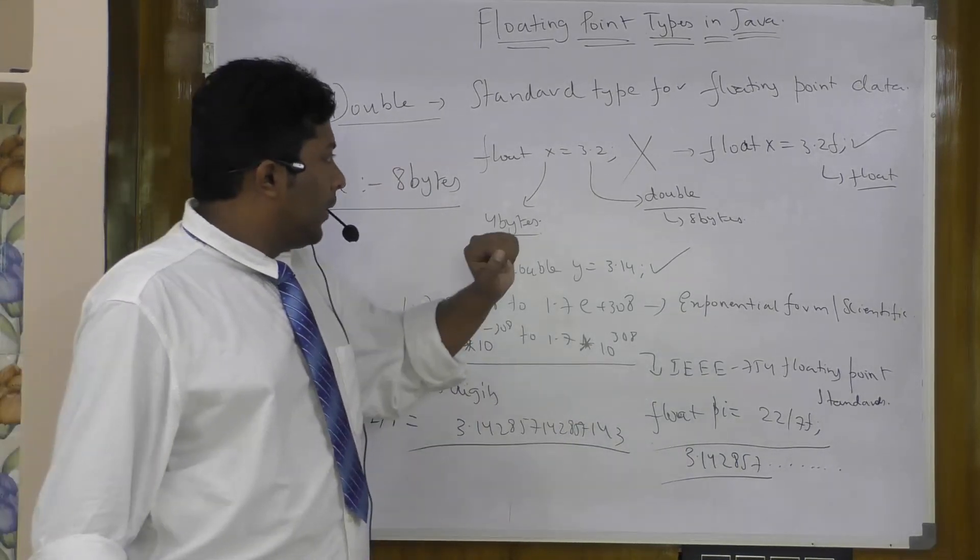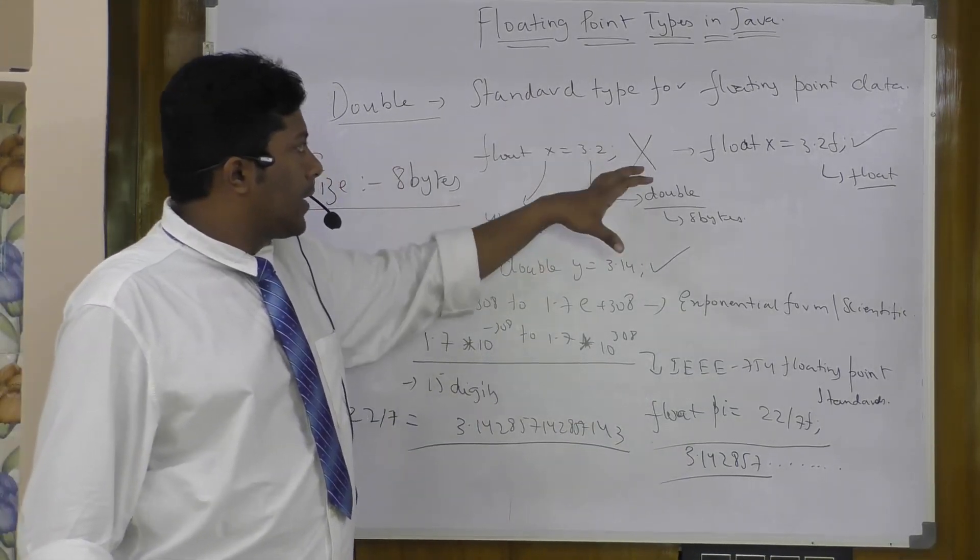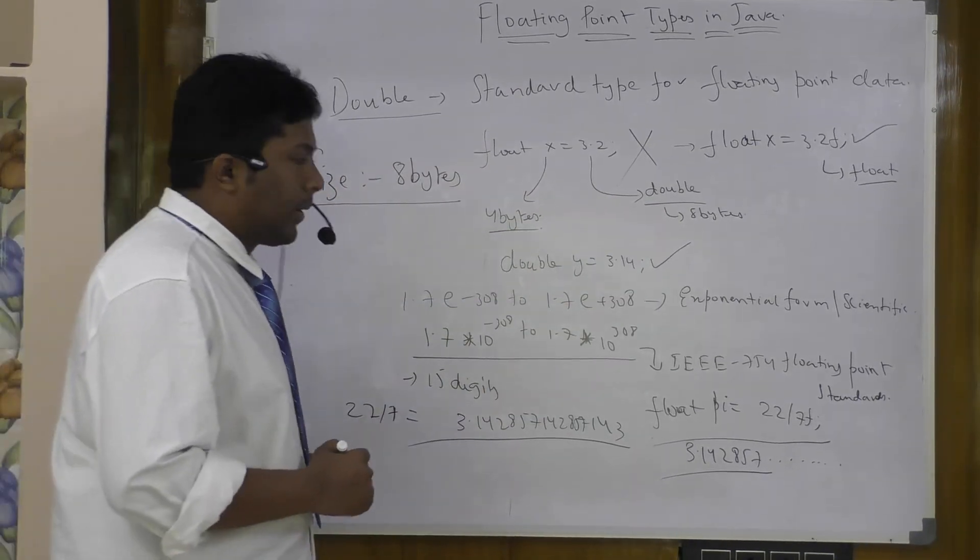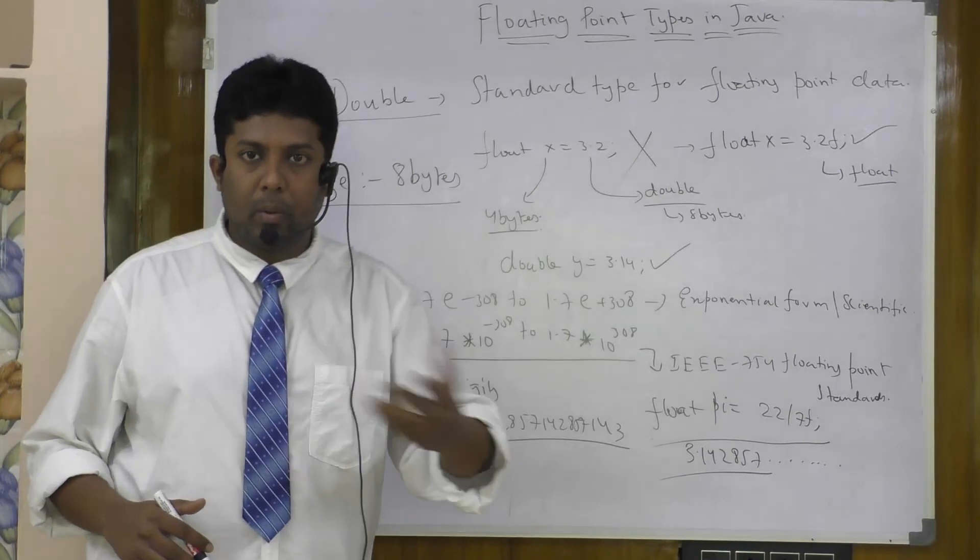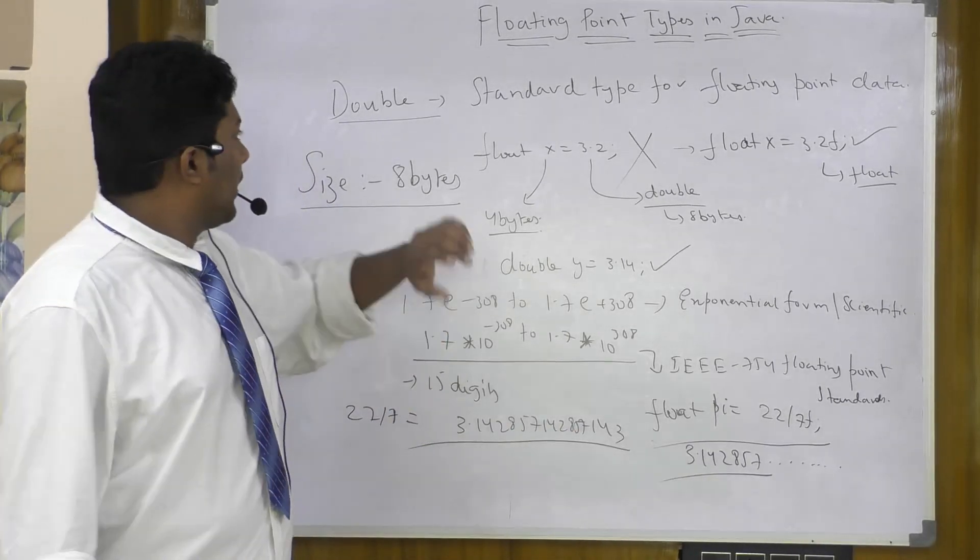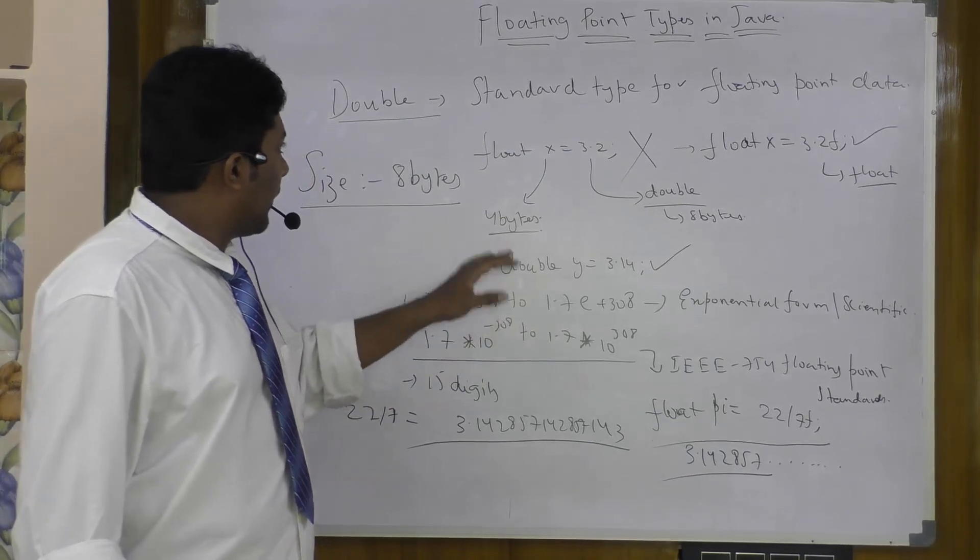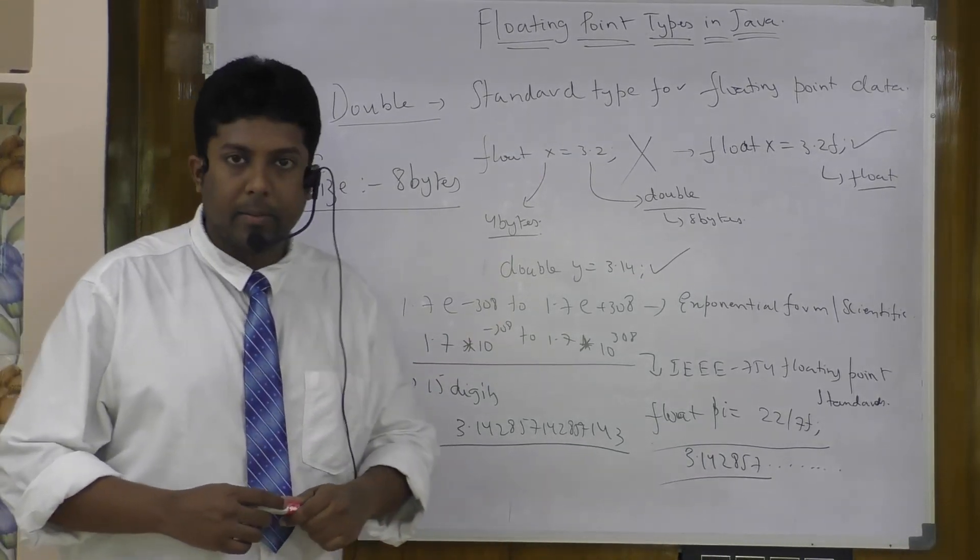If you are serious about the accuracy, you must go for double. And if you are not that serious about accuracy and if you don't want that much accuracy, you can go for float. So this is all about the double type. See you in the next lecture.